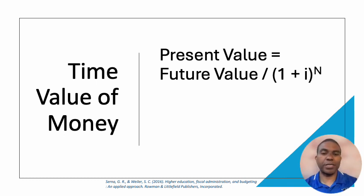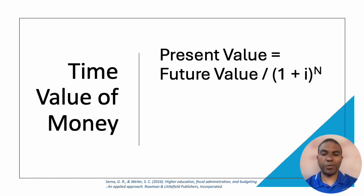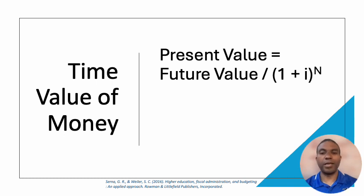Another big concept for this chapter is the time value of money. This isn't really a math class, so I'm not going to grade you on math — I just want you to be exposed to the formulas. The big thing is to understand that prices have gone up; there's inflation. Generally, everything is going to cost more in the future. The chapter talks about present value and comparing that to future value. The present value is equal to the future value divided by one plus the interest rate, raised to the power of the number of discount periods or years.